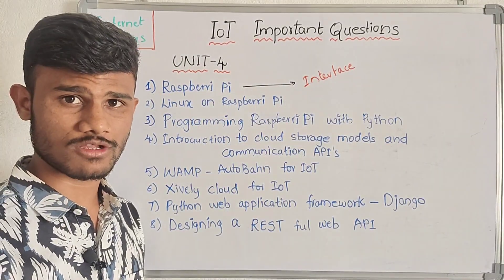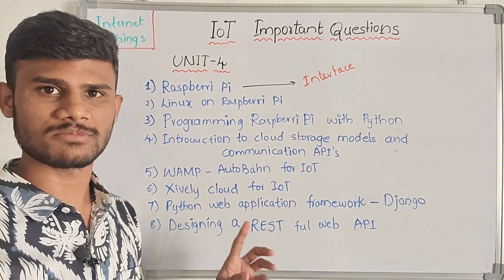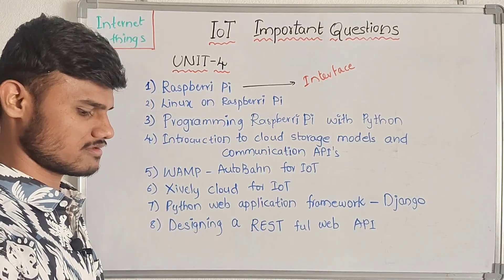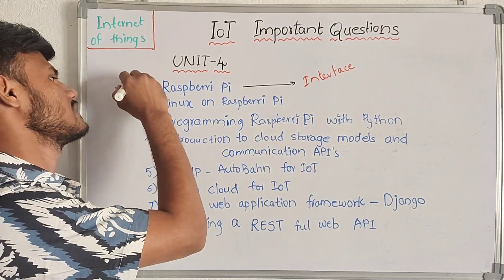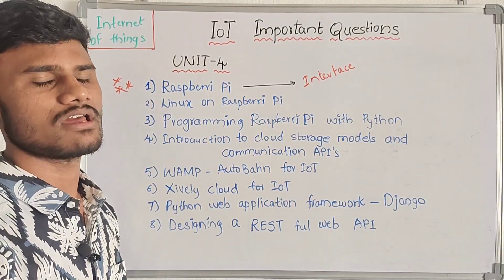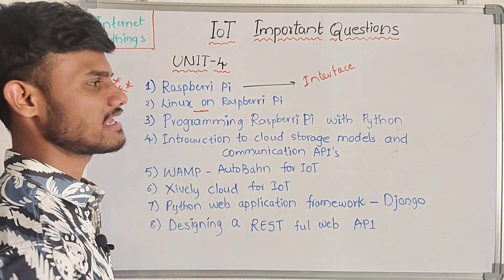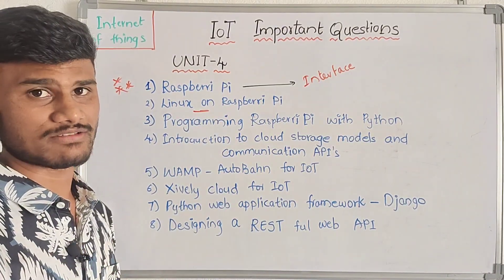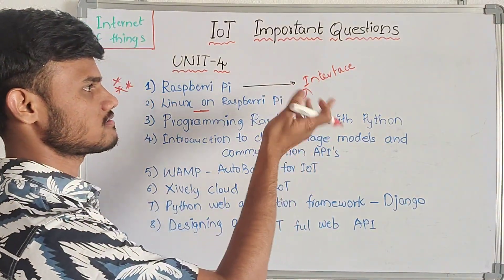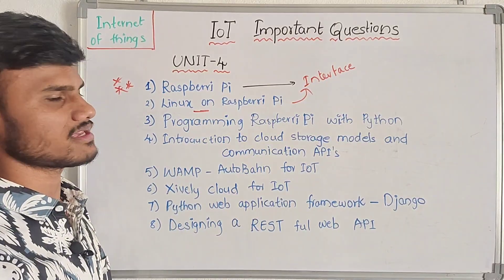Now coming to our 4th unit — we need to cover Raspberry Pi and Cloud Storage. We already need to do Raspberry Pi in the subject. There are a lot of major concepts. The first question is obviously Raspberry Pi — its interface, architecture, and implementation process. Next is Linux on Raspberry Pi. Using both combinations, you can easily answer.